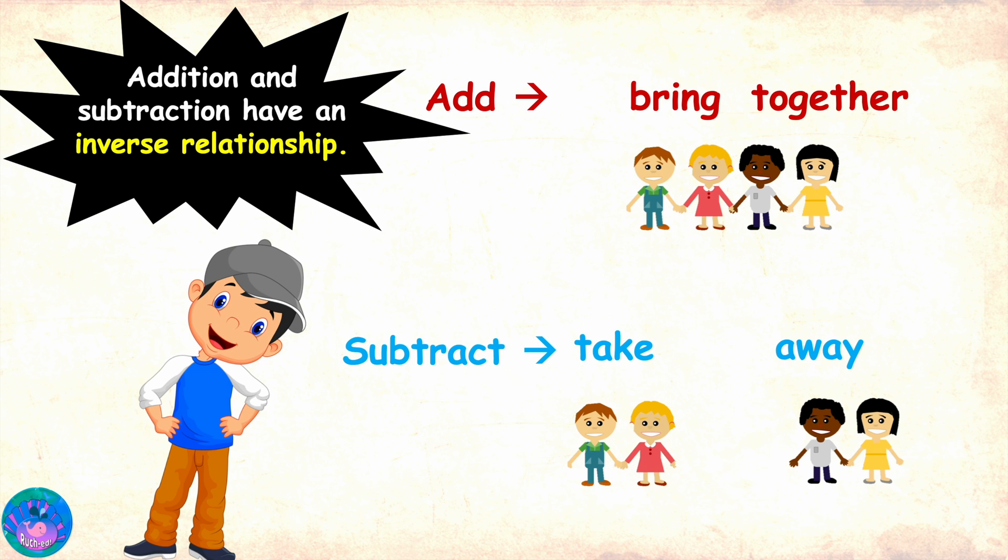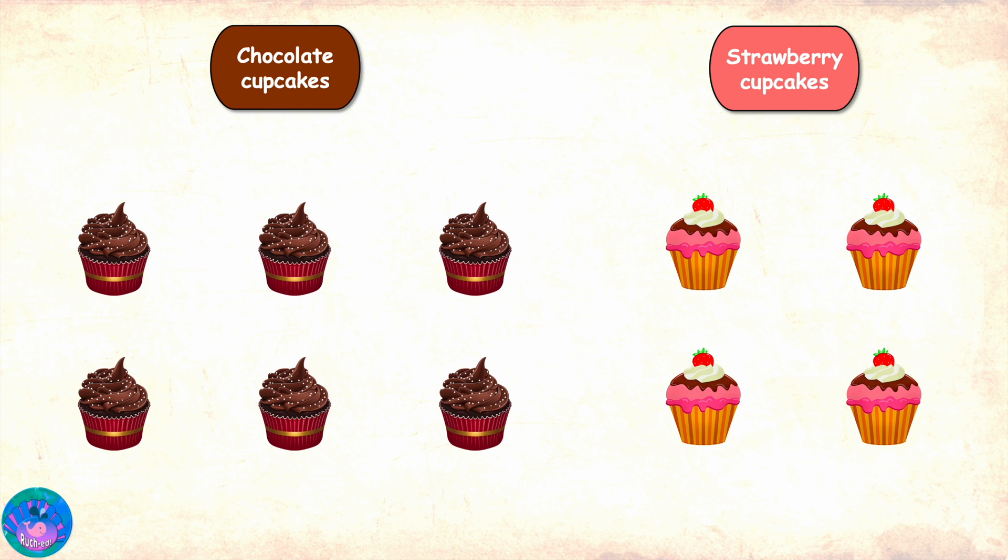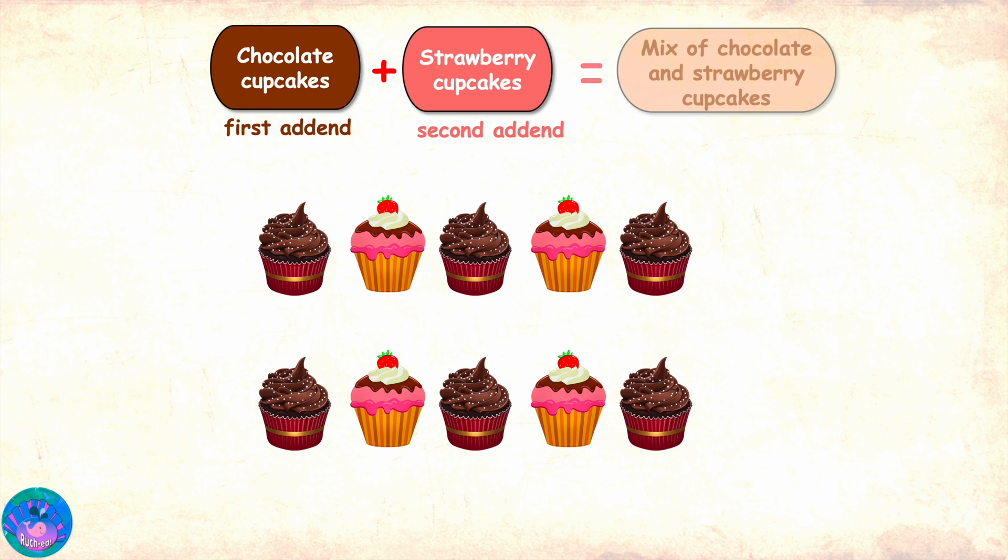Now let us translate this into mathematical terms using the example of cupcakes. Here we have some chocolate cupcakes and some strawberry cupcakes which we are going to bring together or add. In mathematical terms, the numbers being added are called addends. So chocolate cupcakes become the first addend and the strawberry becomes the second addend. When we add them together, we get a mix of chocolate and strawberry cupcakes. In mathematical language, this will be the sum which is the result that we get on adding addends.